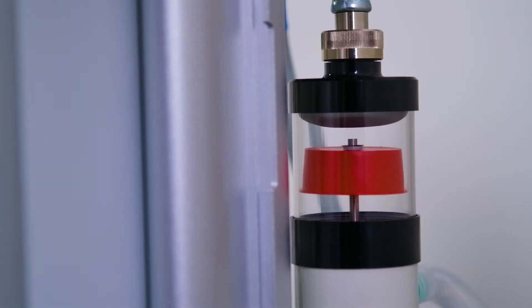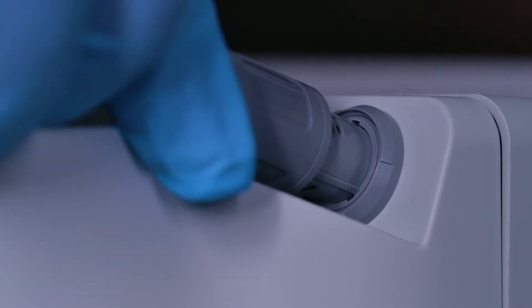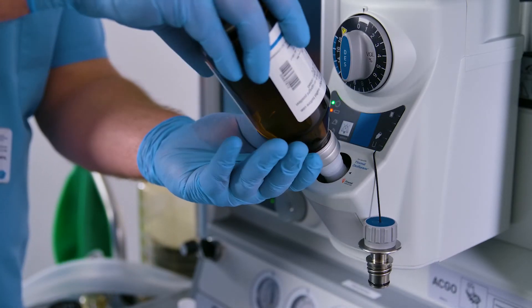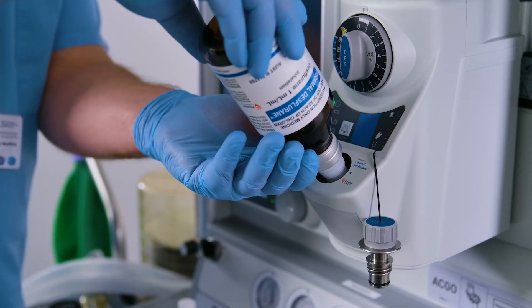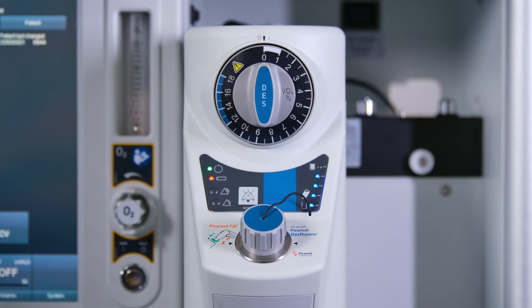Mount the vaporizer on an anesthetic machine equipped with an anesthetic gas scavenging receiver. Connect the electrical power supply cable. Fill the vaporizer with desflurane. Allow the vaporizer to finish warming up and enter standby mode. This is indicated by the power indicator being continuously illuminated.